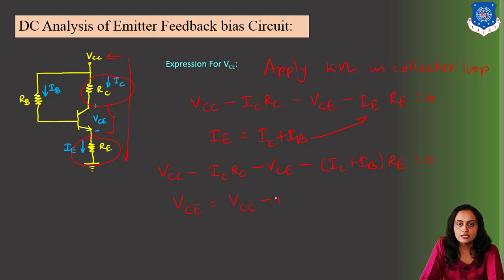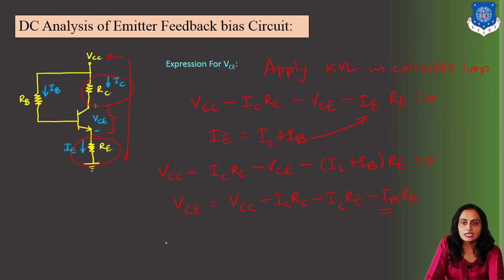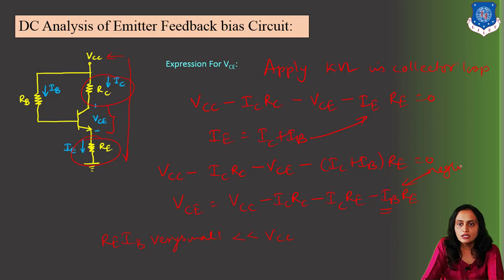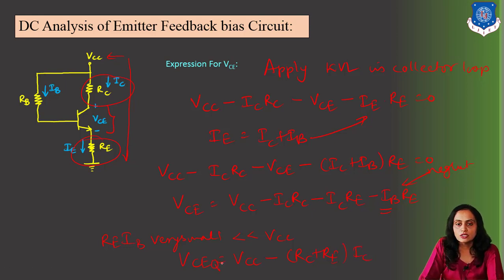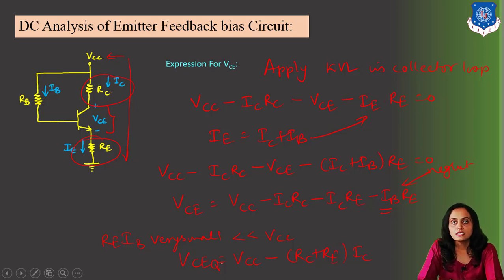Now, the base current IB is very small, so the drop RE·IB is very small compared to VCC and can be neglected. Neglecting this term and rearranging, we get: VCEQ = VCC − (RC + RE)·IC. This is the equation for VCEQ, the quiescent point coordinate, and this is how we can calculate VCEQ.